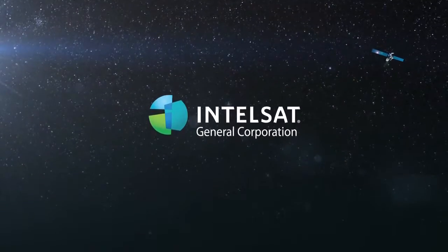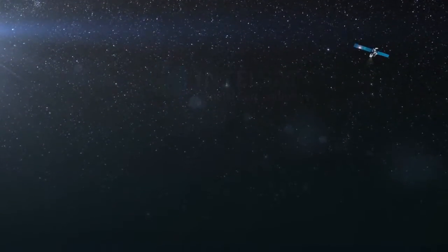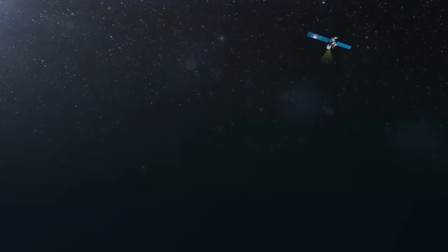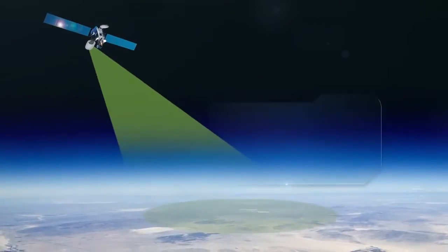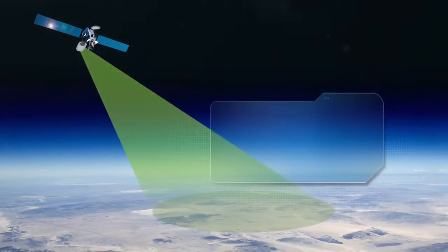22,000 miles above Earth, Intelsat satellites move through empty, quiet space, sending and receiving thousands of signals at a time over footprints that can cover entire continents and millions of people.